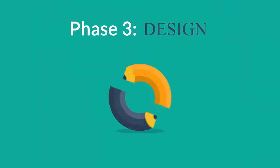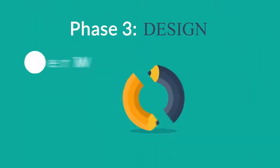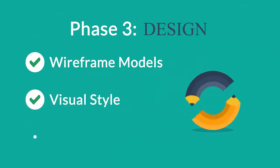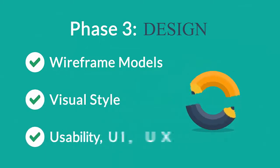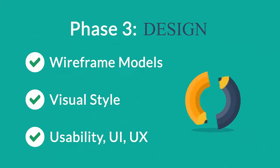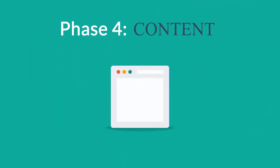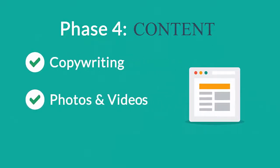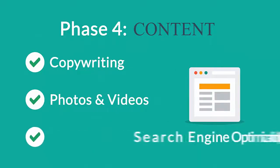Phase 3 — Design: not only focused on wireframe models and the visual style in this stage, but also on the usability of the user interface for the best possible user experience. Phase 4 — Content: a very important part of the process is choosing the right text, photos, or videos, all optimized not only for your visitors but also for search engines.